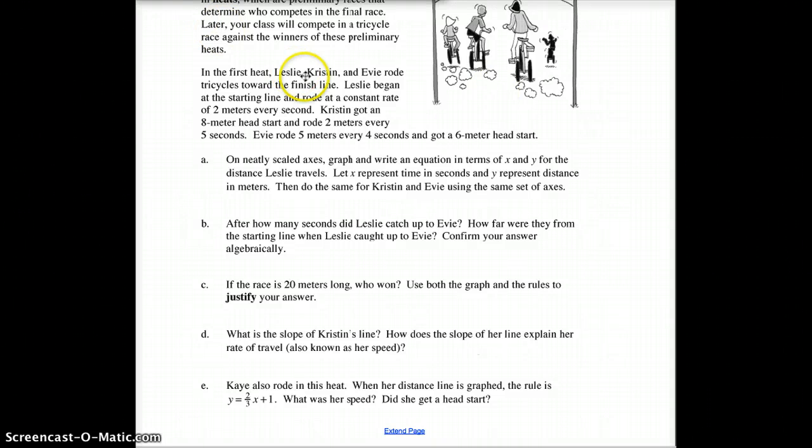In the first heat, Leslie, Kristen, and Evie rode tricycles towards the finish line. Leslie began at the starting line—we'd call that at zero or the origin—and she rode at a constant rate of 2 meters every second. Take out graph paper. You only really need quadrant 1. Put Leslie starting at the starting line at the 0,0 spot, and she rode at a constant rate of 2 meters every second. I can think of that as up 2 over 1. That's the last help I'm giving you on that part.